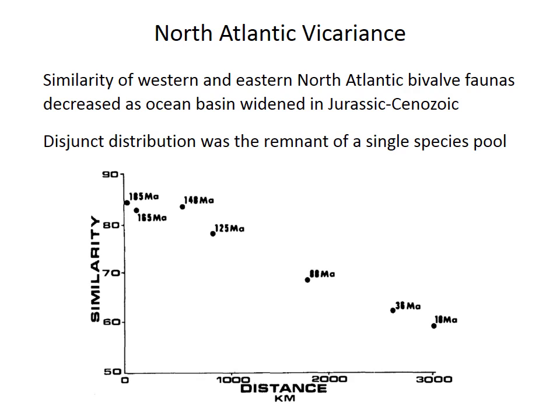Here's another observation most likely representing vicariance: people have observed that the similarity of fossil bivalve faunas on the western and eastern sides of the North Atlantic Ocean decreased from the Jurassic and Cretaceous through the Cenozoic to the present. Early in the spreading of the North Atlantic — around 185 or 165 million years ago — the ocean basin was narrow, so larvae of many species could drift from one side to the other, producing high similarity. As the ocean gradually widened — around 125 or 88 million years ago — progressively fewer species had larvae that could travel that wide distance, and species composition on each side gradually evolved to be increasingly distinct.